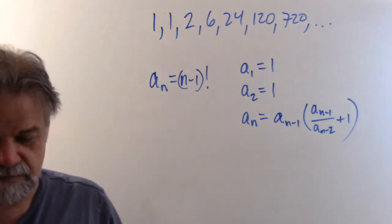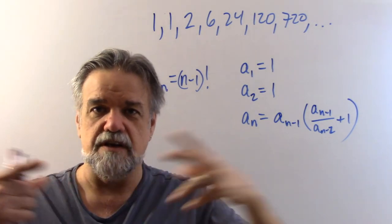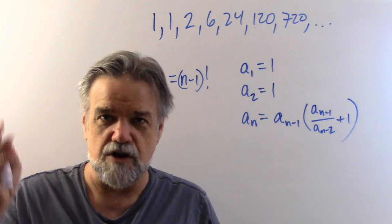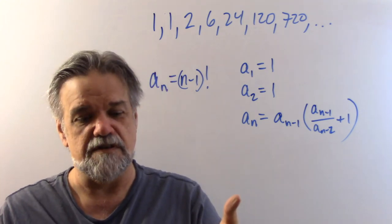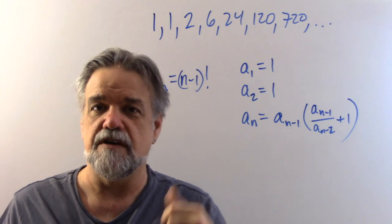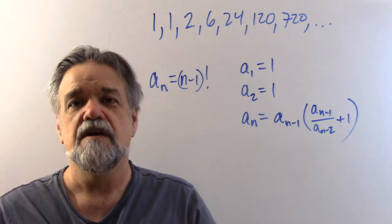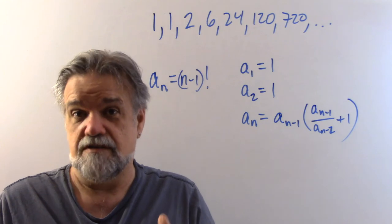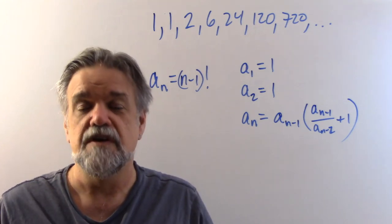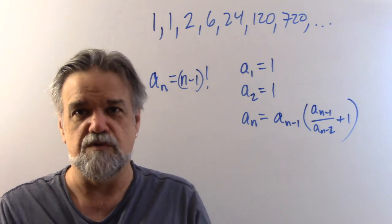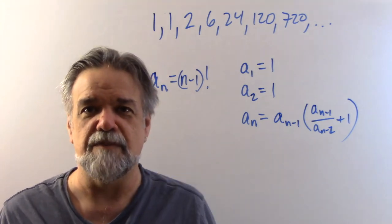So I hope you know what a sequence is now. It's just a string of numbers that go in a particular order. You can have finite sequences; you can have infinite sequences. Sequences can be defined explicitly or recursively. Not all sequences lend themselves to both — some lend themselves much more to one type than to the other. All right, see you next video. Bye-bye.